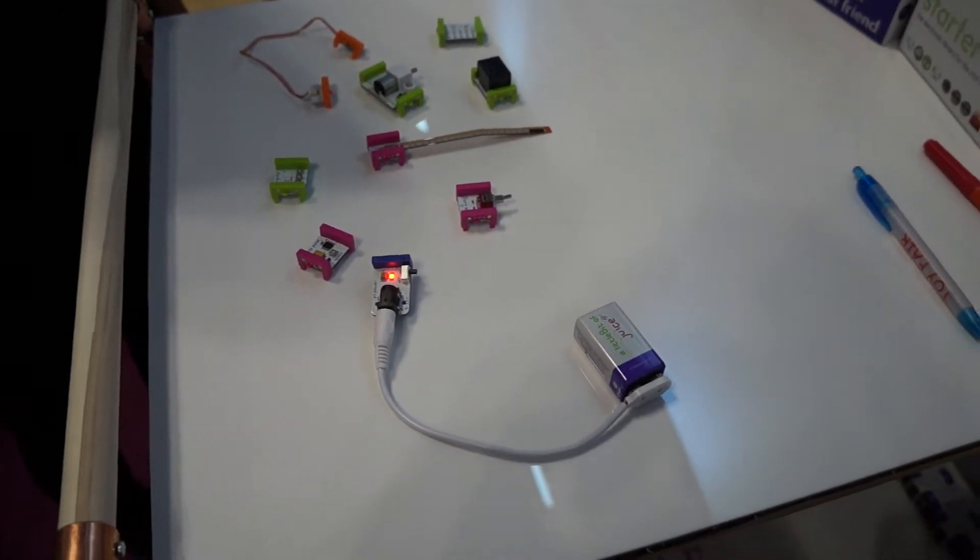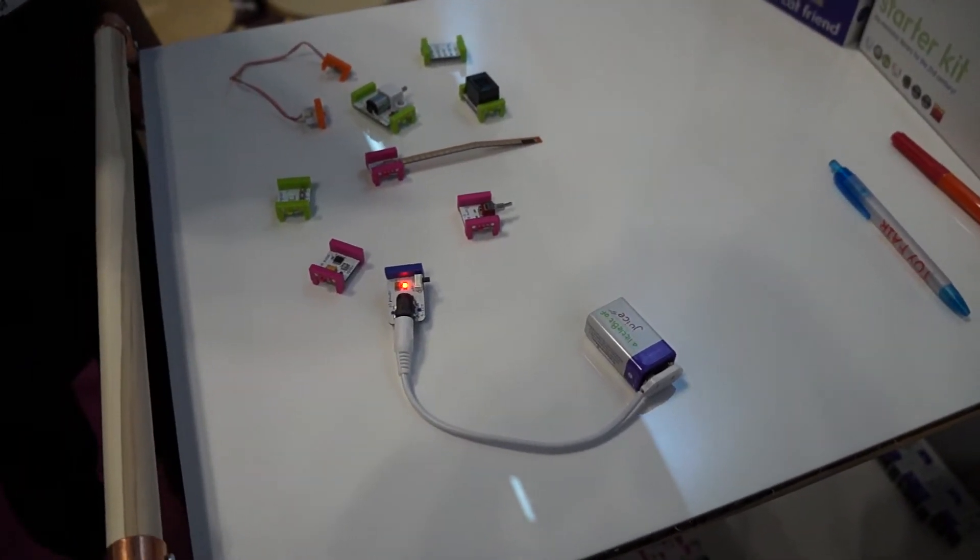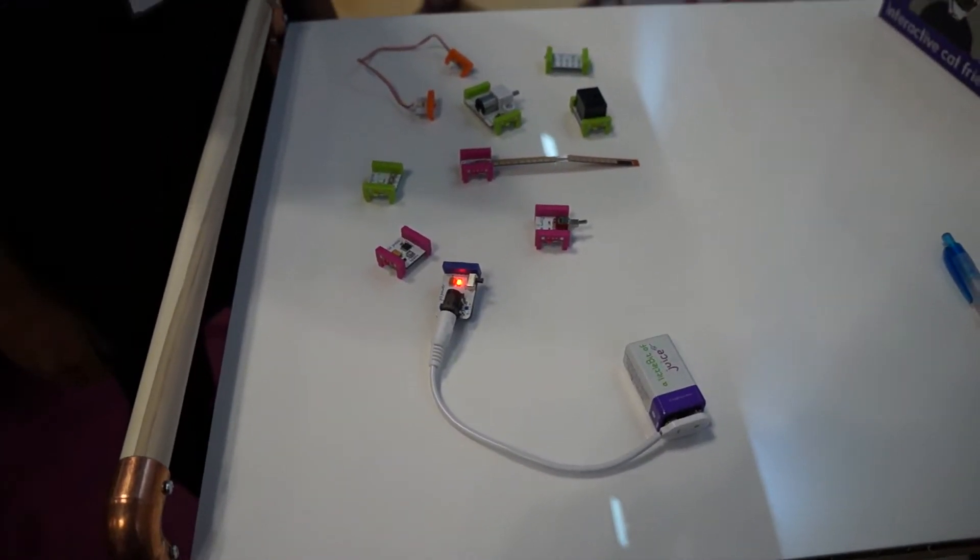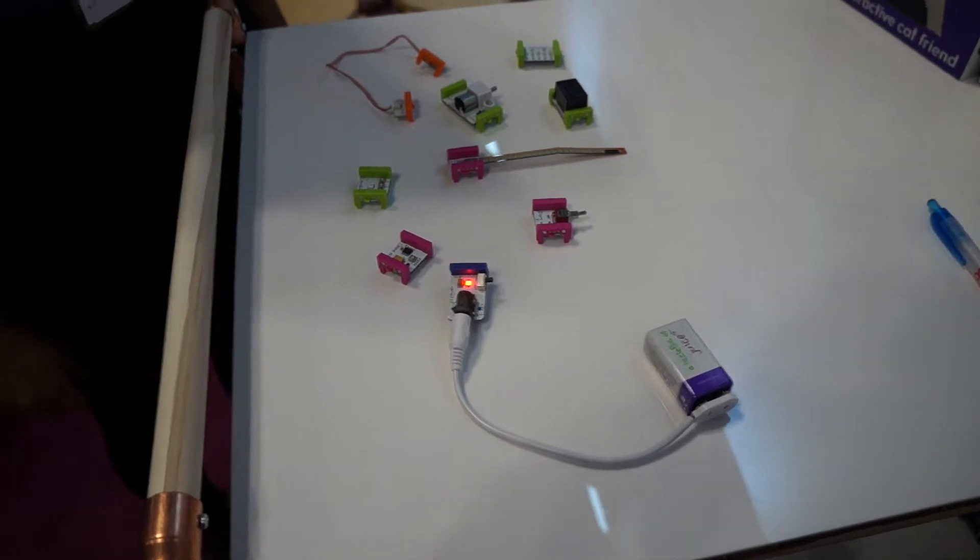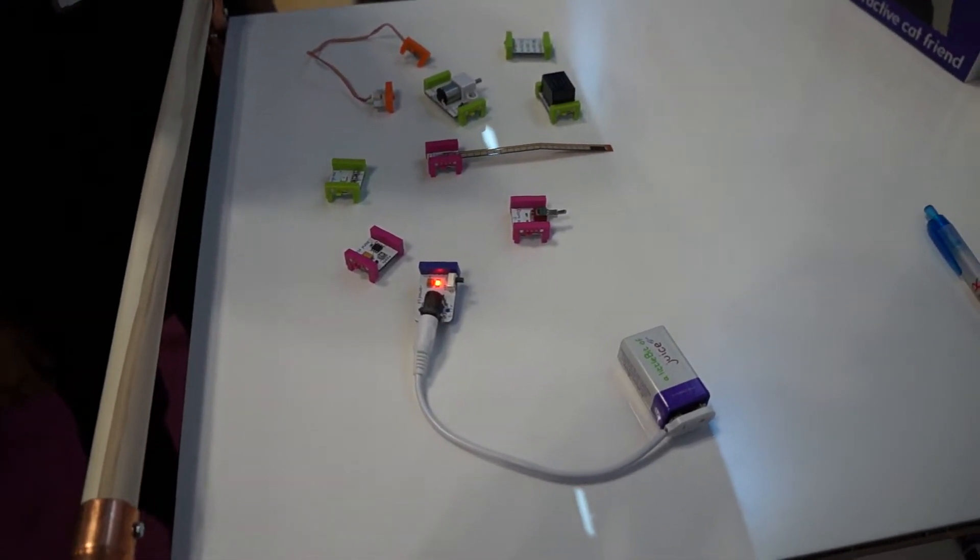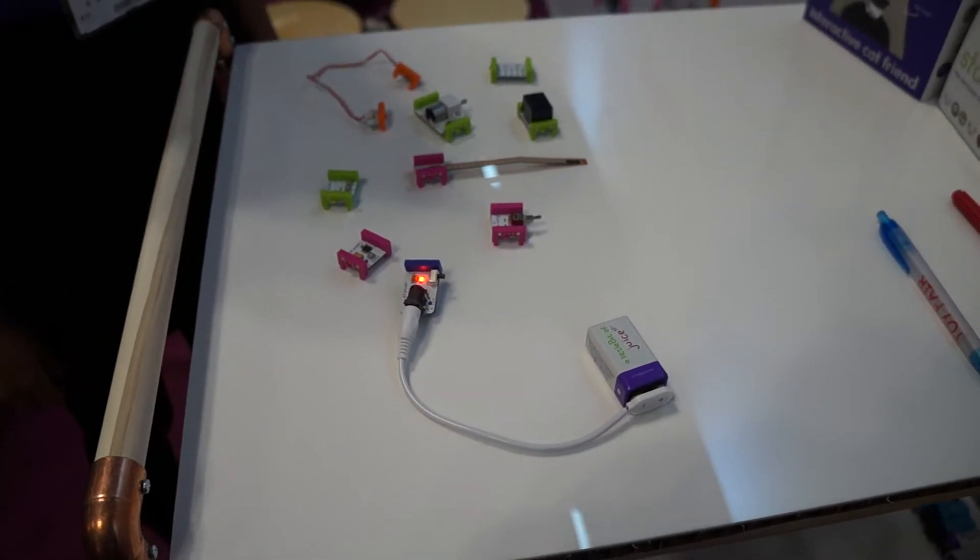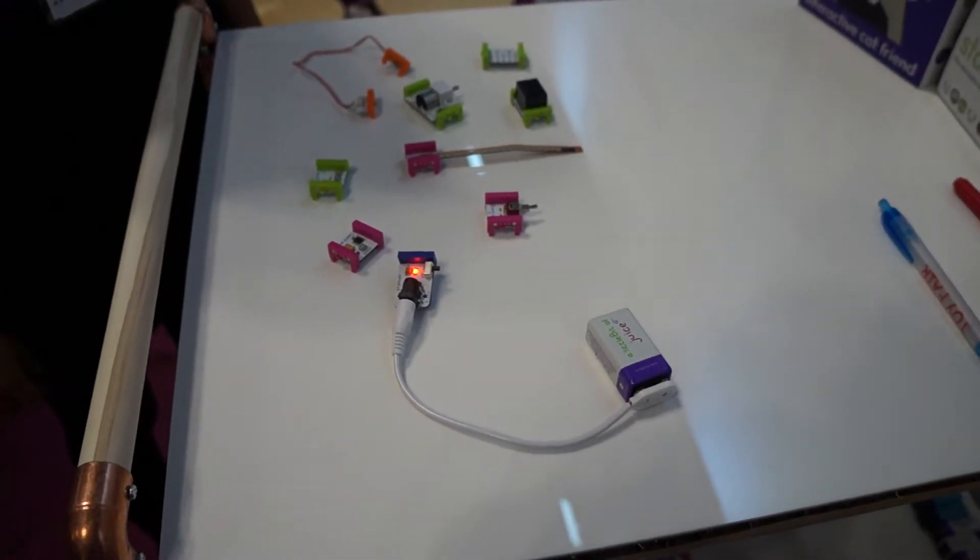This is Daniel with Laptop Magazine and I am here at the 2013 Toy Fair and we're taking a look at Little Bits, which are little tiny individual circuits that snap together with magnets in order to create larger robots and toys and different things of different personalities and different functionality. So tell me a little bit about these Little Bits and what they can do.